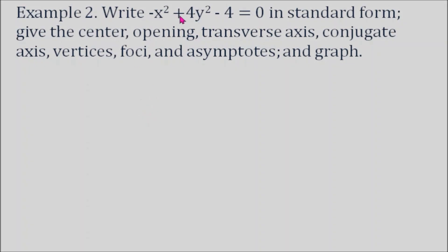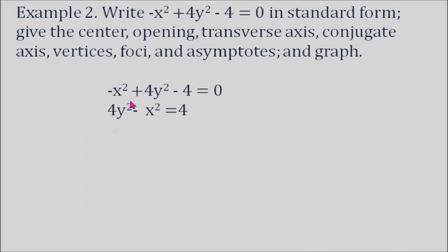Example 2: Write −x² + 4y² − 4 = 0 in standard form. Give the center, opening, transverse axis, conjugate axis, vertices, foci, asymptotes, and graph. First, move −4 to the right and rearrange so the first term is positive: 4y² − x² = 4. Divide by 4 to get y² − x²/4 = 1. Our a is 1 (square root of 1) and b is 2 (square root of 4). Using c² = a² + b², c equals the square root of 1 + 4 = √5.